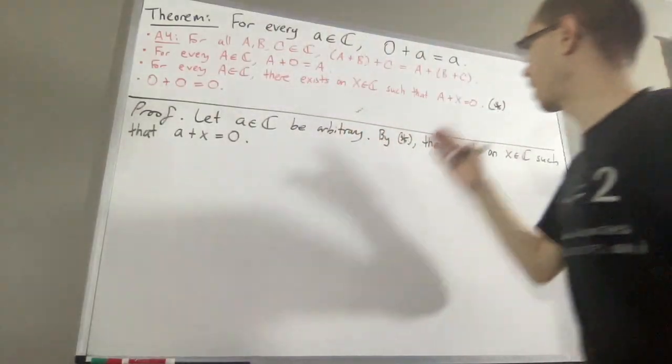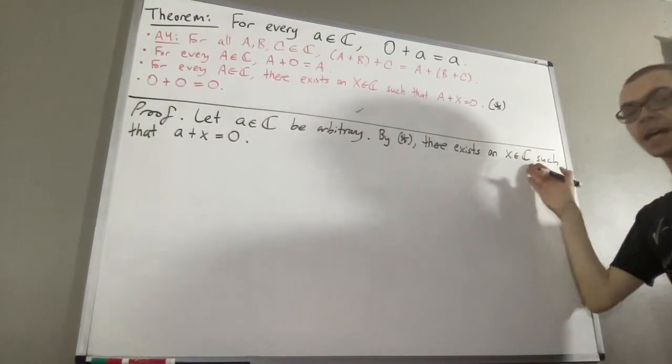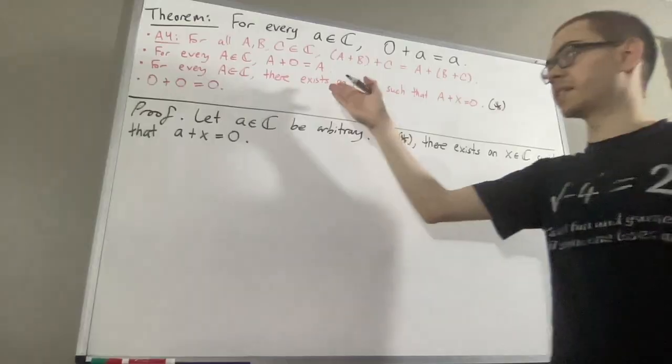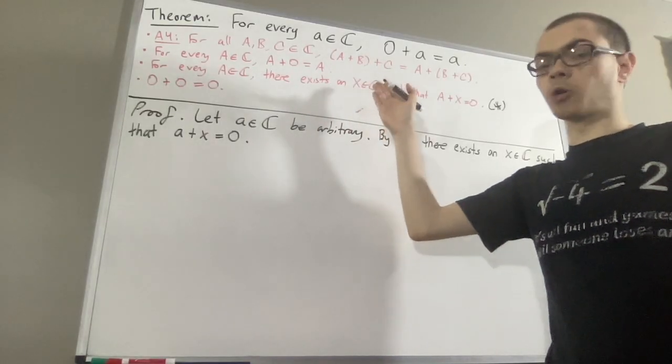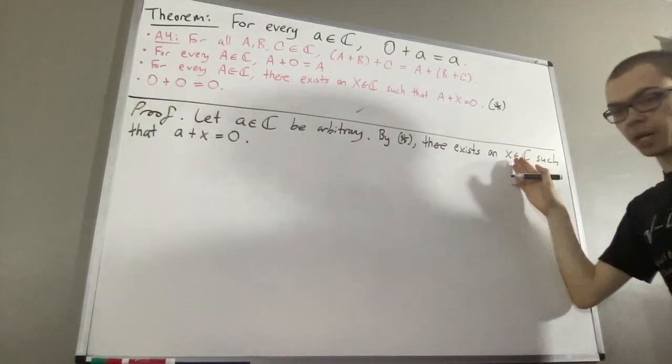But now we're going to apply star again. Since x is a complex number, there must exist a complex number, I'll call y, such that x plus y is equal to 0.